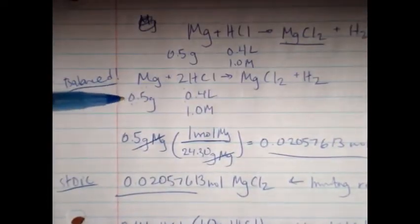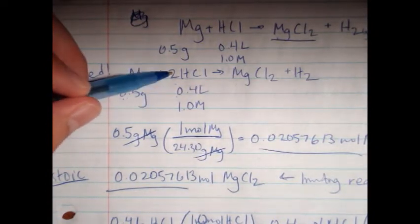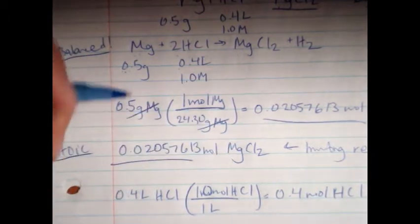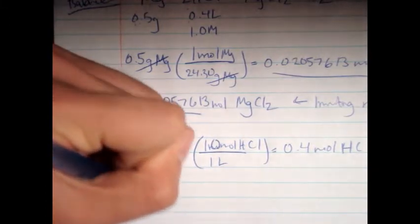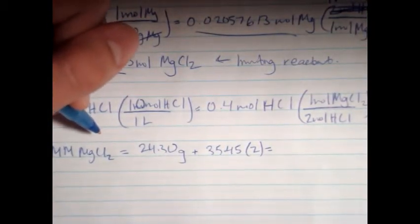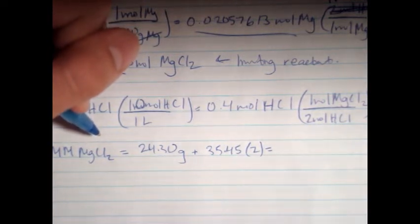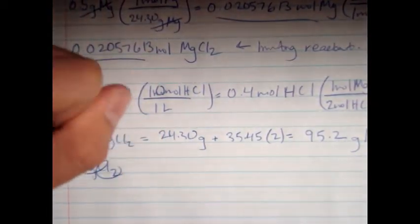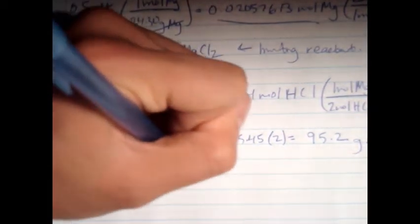So basically, because you did 0.5 grams and dissolved it in 0.4 liters of 1 mol HCl, you got 0.02057613 mols of MgCl2, but now we're going to convert that to grams. So the molar mass of MgCl2 equals 24.30 grams plus Cl 35.45 twice because you have two chlorides. So that is going to give you 24.3 plus 35.45 plus 35.45, 95.2 grams per mol.